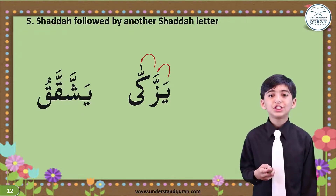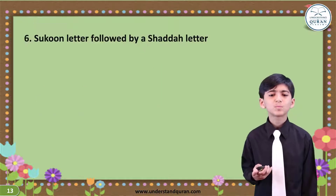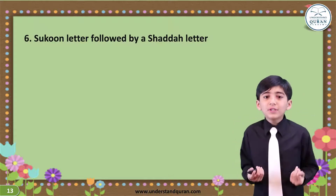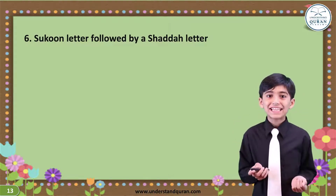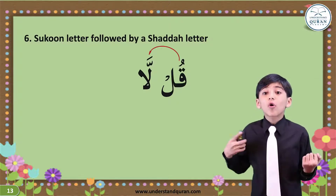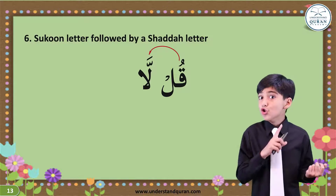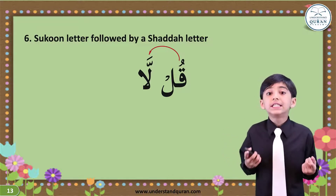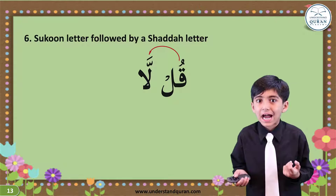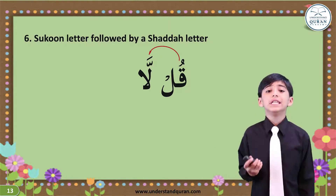Rule number 6: Sukun letter followed by a Shadda letter. So in Qulla, the Qaf will run to help the Shadda — not the Sukun — because the Shadda is a stronger help sign. It needs more help. And we will read it as Qulla.